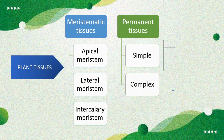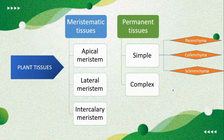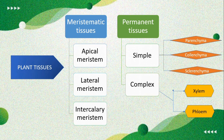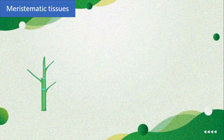Simple tissues are classified into three major types: parenchyma, collenchyma, and sclerenchyma. Complex tissues are divided into two types: xylem and phloem. These are the major categories of plant tissues. Now we will take up the meristematic tissues.